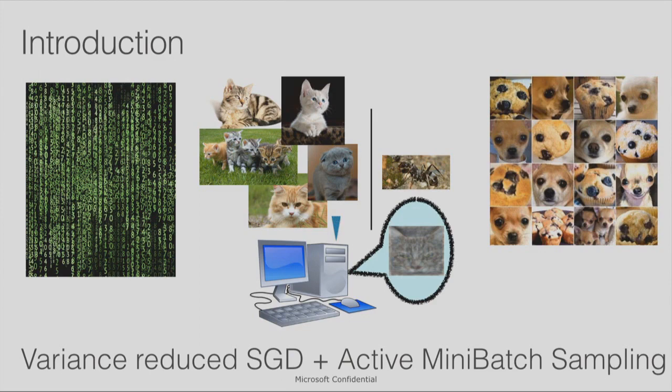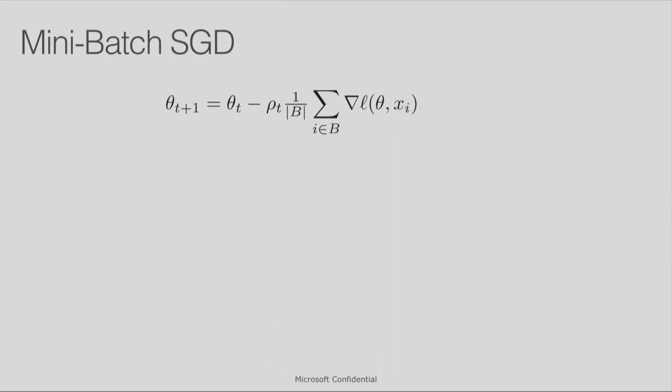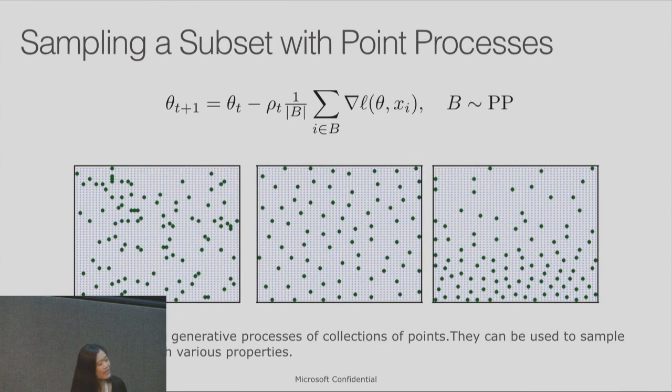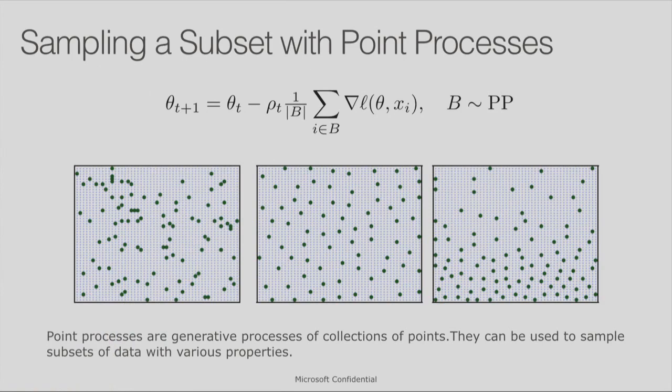In general, when we do SGD, this is standard way. Let's say the mini-batch is B. We sample a mini-batch. We update the parameter based on the estimated gradient with certain learning rate. My proposal is very simple. Instead of random sampling the data points to form a mini-batch, we can do a point process to sample the data. Point process, in general, just models how the data points are sampled from all data sets.